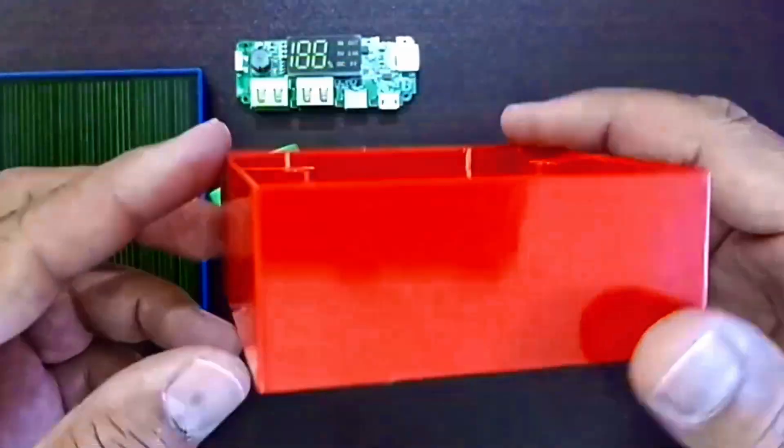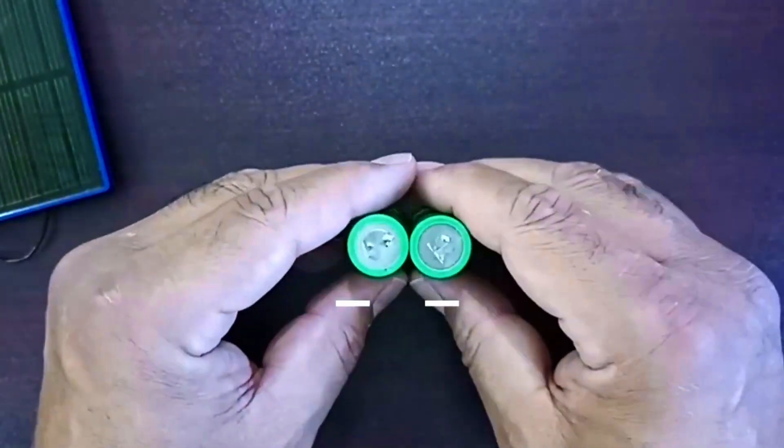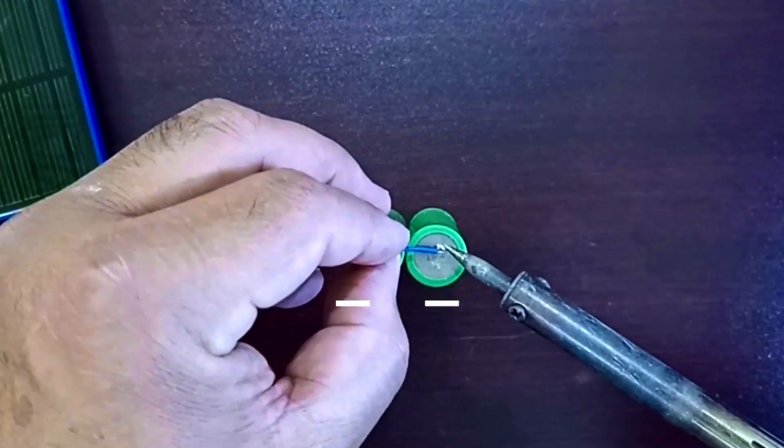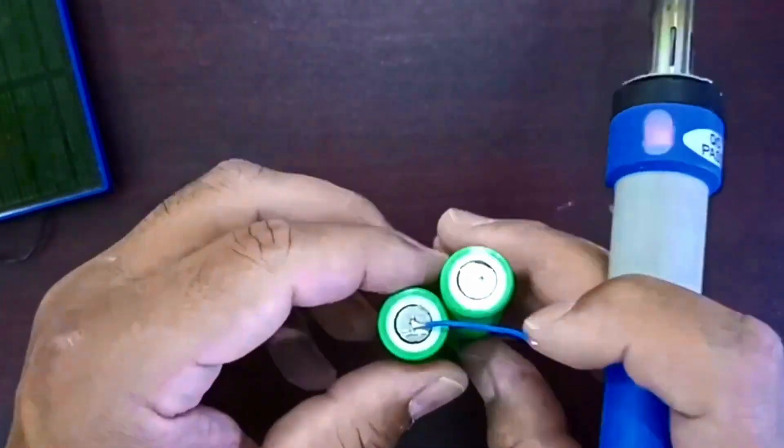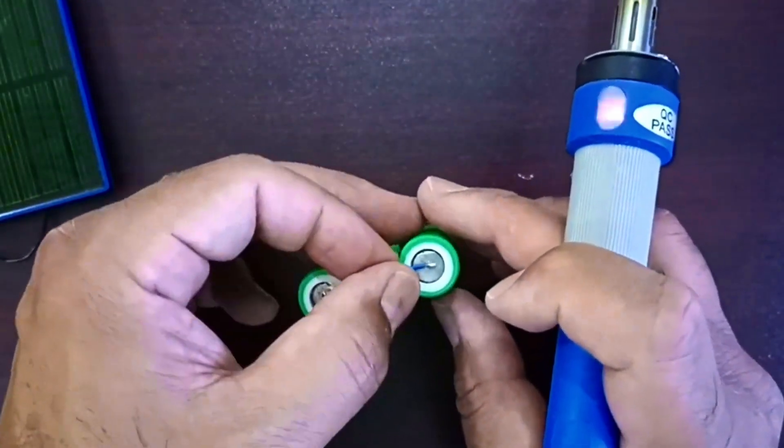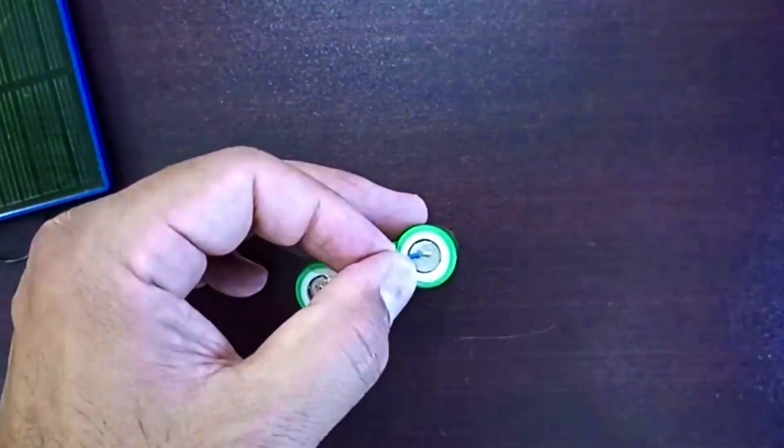First up, let's solder the batteries together, negative to negative, positive to positive. Nice and clean. Solid connections are key, especially if you want this thing to survive being tossed in a bag.